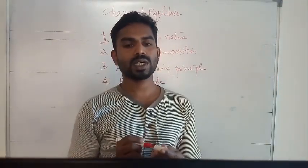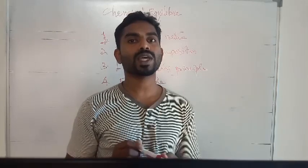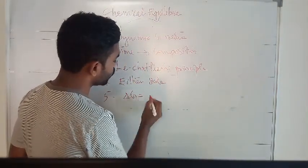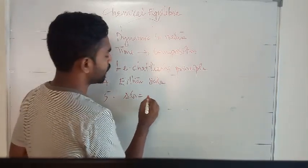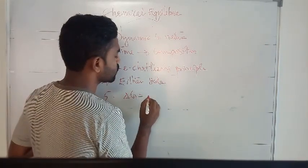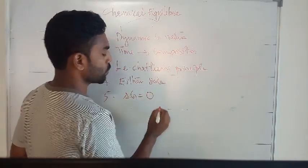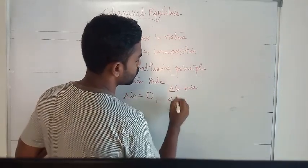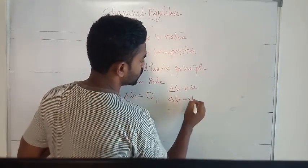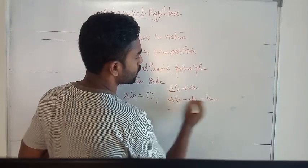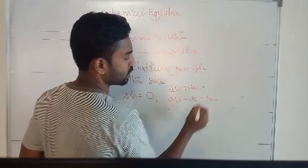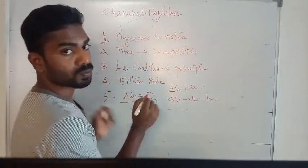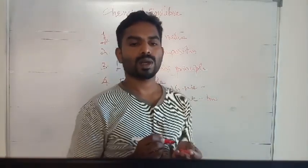The fifth characteristic: it represents a stage at which the Gibbs free energy change, Delta G, for the reaction is zero. For a forward reaction, Delta G is negative; for a backward reaction, Delta G is positive. At chemical equilibrium, Delta G equals zero.